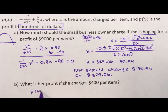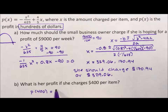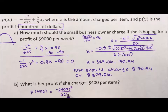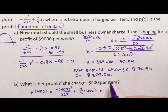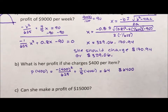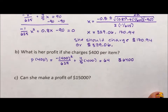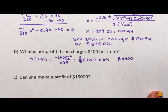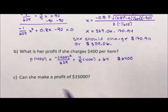P of 400 is negative 400 squared divided by 625, plus four-fifths times 400, which gives us 64 — so the profit is 6400, remembering that the output is in hundreds of dollars, meaning a profit of $6,400.